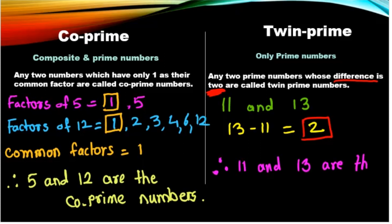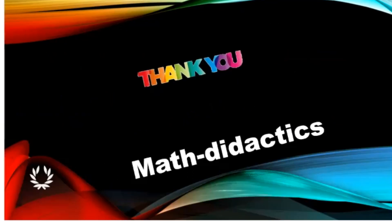The very important thing to remember is that in co-prime numbers, both composite and prime numbers are there, but in twin prime numbers, only prime numbers are there. I hope you have learned co-prime numbers and twin prime numbers. Thank you.